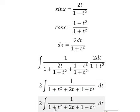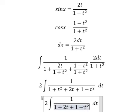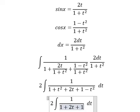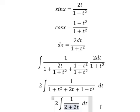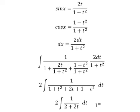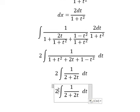So t squared minus t squared, 1 plus 1, we have 2. So 2 divided by 2.